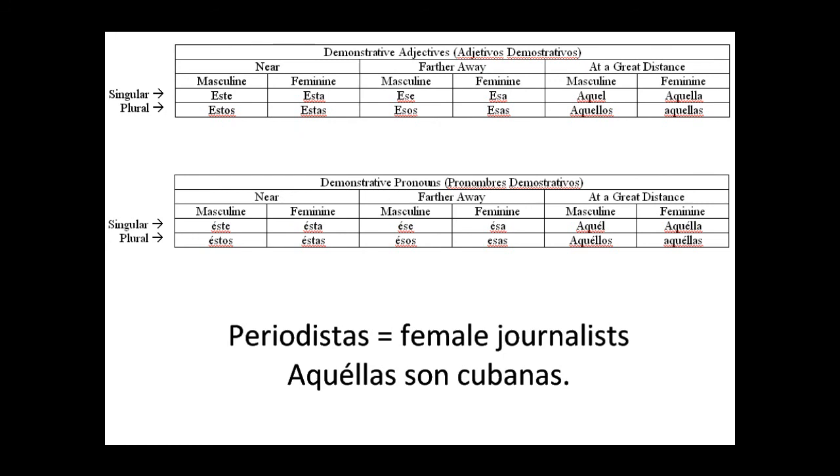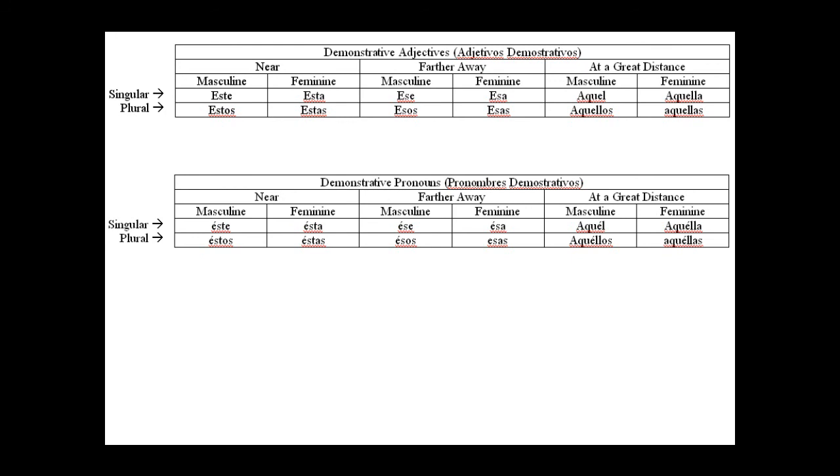So hopefully you've noticed now, in order to use these demonstrative pronouns, all you have to do is eliminate the noun from your sentence, and put an accent mark over the first e on your demonstrative adjective, and it becomes a demonstrative pronoun. So it's a pretty simple step to take, just eliminate the noun, put an accent mark over that first e, and you have your demonstrative pronoun.